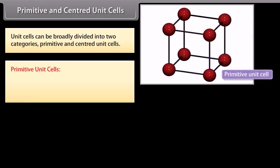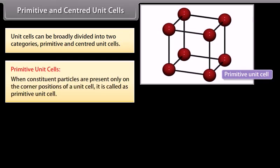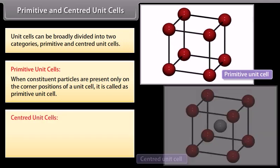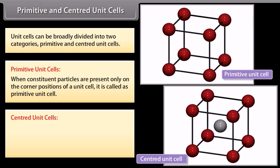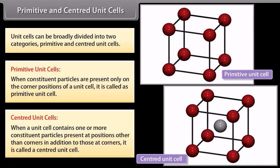Unit cells can be broadly divided into two categories: Primitive and Centered Unit Cells. When constituent particles are present only on the corner positions of a unit cell, it is called as primitive unit cells. Centered Unit Cells: When a unit cell contains one or more constituent particles present at positions other than corners in addition to those at corners, it is called a Centered Unit Cell.